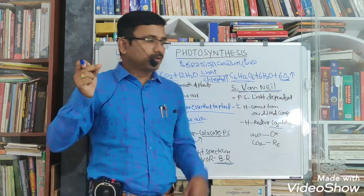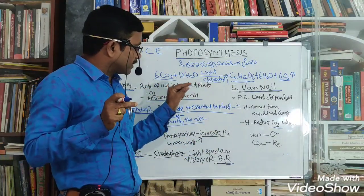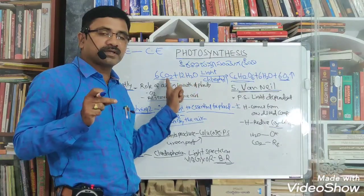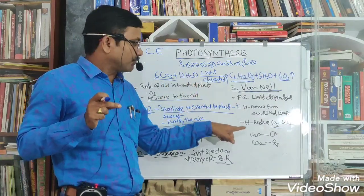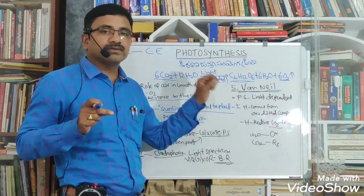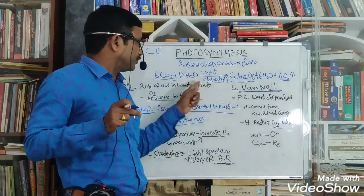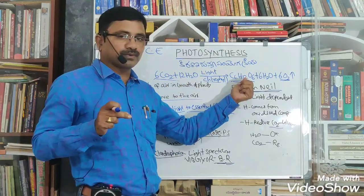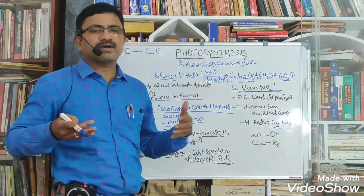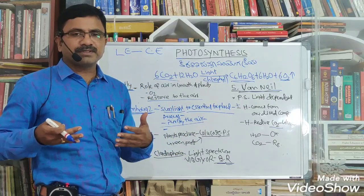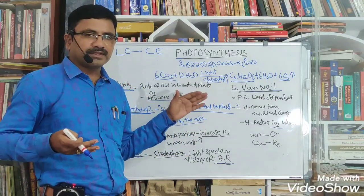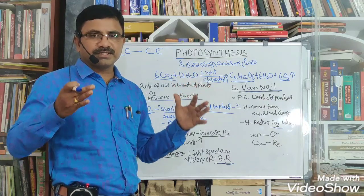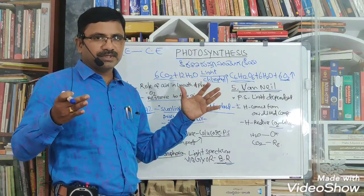Water gets oxidized to release hydrogen ions. Carbon dioxide receives hydrogen ions and gets reduced to form glucose. These are a few experiments conducted by scientists who contributed standard evidence-based information about photosynthesis.